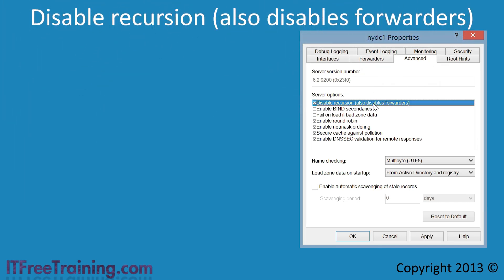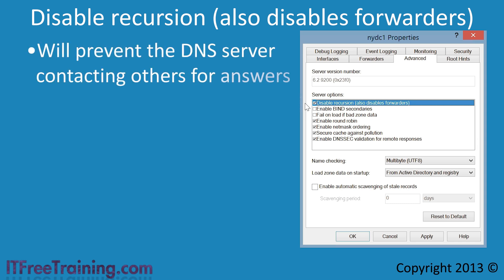The first option is disable recursion, which also disables forwarders. This is off by default, which essentially means the DNS server, when asked a query it does not know, will attempt to find out the answer. If this option is turned on, it will prevent the DNS server from contacting other DNS servers in order to answer the query. If you have a DNS server on a network that is not intended to contact other DNS servers — for example, a DNS server on a secure network — you should consider enabling this option.